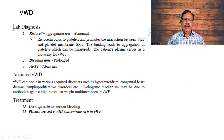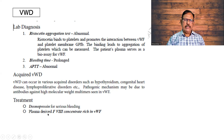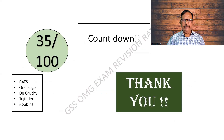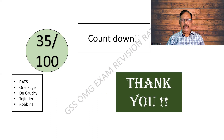The lab diagnosis is important. The ristocetin aggregation test is used. Bleeding time is prolonged and APTT is abnormal. There is also an acquired form that can occur in hypothyroidism and heart diseases. Treatment is with desmopressin or plasma-derived Factor 8 and Von Willebrand's factor. That brings us to the end of class 35 — the previous class was important, so kindly go through it deliberately.